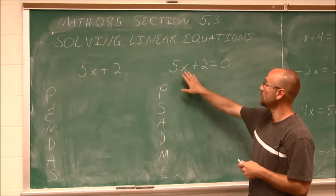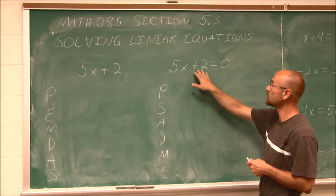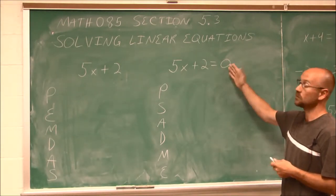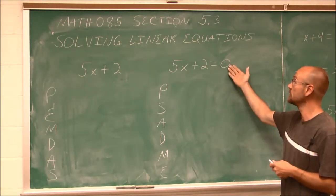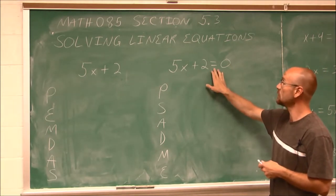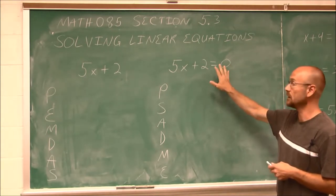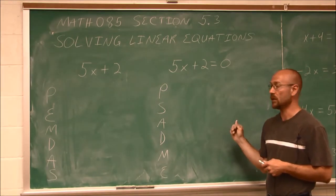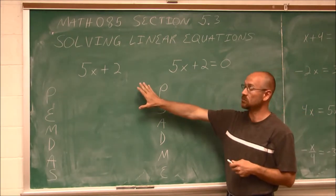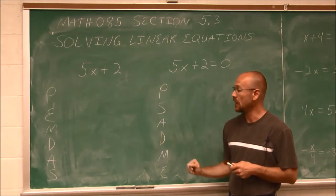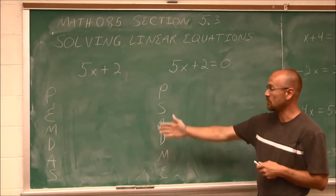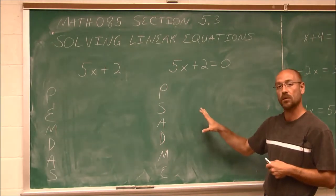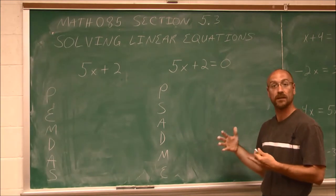When it comes to an equation, here we have 5x plus 2 set equal to the expression of this constant, which in this case is 0. So we have this equal sign — this is an equation. How do we go about solving equations? We know we simplify expressions using order of operations, but to solve an equation, we use order of operations in a different order.